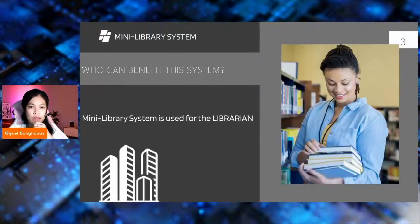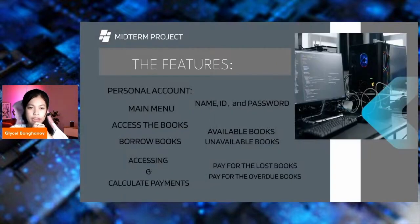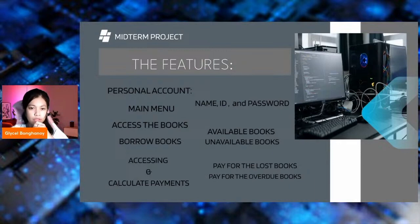Who can benefit from this system? This mini-library system is used for the librarian. The features include: first, a personal account consisting of the name, ID, and password. It also has a main menu consisting of access to books, borrowing of books, and searching for available and unavailable books.